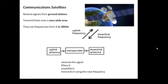Interestingly, the frequency that goes up to the satellite — the uplink — is different to the downlink frequency. They use two separate antennas, and the reason they're different is so that they don't interfere with each other. Inside the satellite there's a thing called a transponder. It receives the signal, filters out any interference, amplifies it, and then transmits it using the new frequency. There are lots of different examples of devices changing the frequency slightly so that the two signals don't interfere with each other.